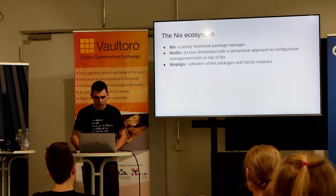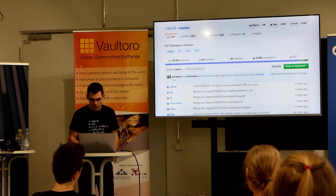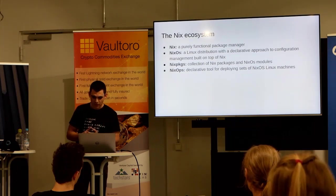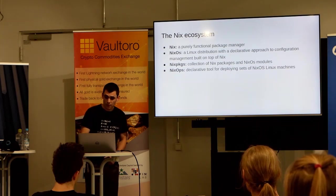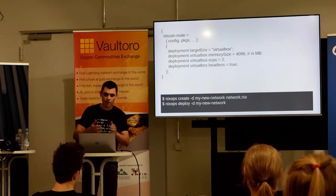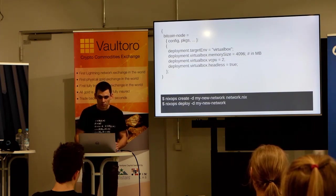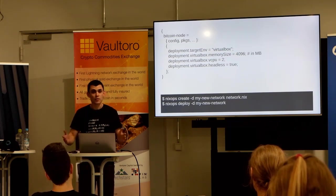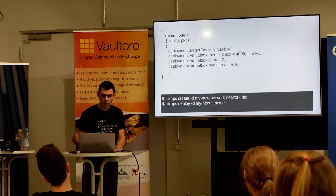Then there's Nix packages — the collection of Nix packages and NixOS modules. Mostly they are just descriptions for how to build these packages, also text files; they look very similar to the modules we've already seen. It's a very transparent GitHub repository. And then there's NixOps, which is a declarative tool for deploying sets of NixOS Linux machines — that's how we deploy NixBitcoin. You have a network file where you say: I have a Bitcoin node — this is my only machine — the target is a VirtualBox with memory size, CPUs, etc. Then you run nixops create to create this network, and then nixops deploy to deploy your configuration on the network.